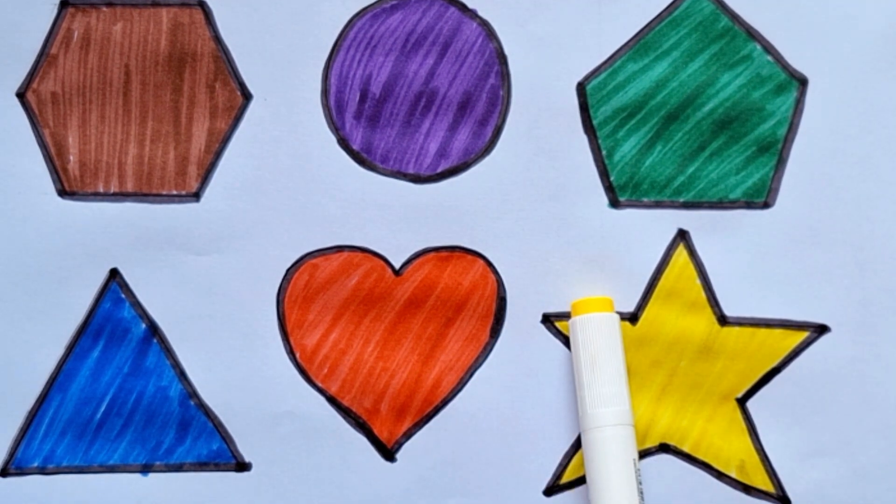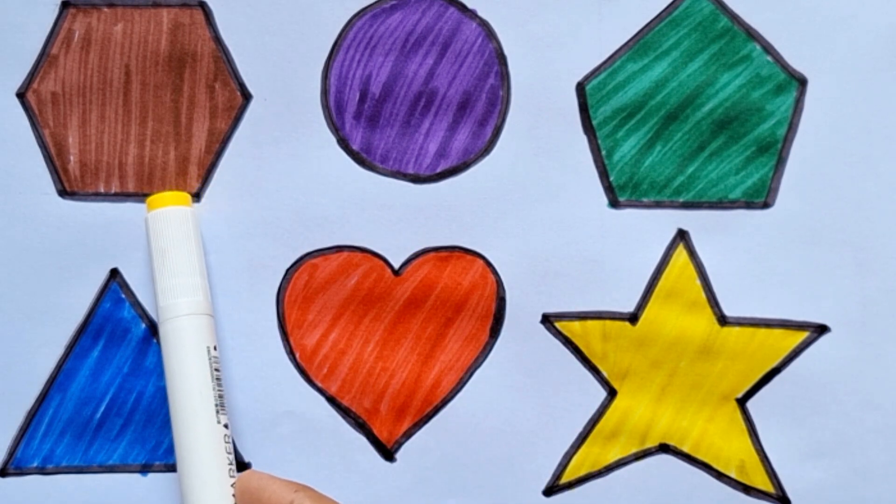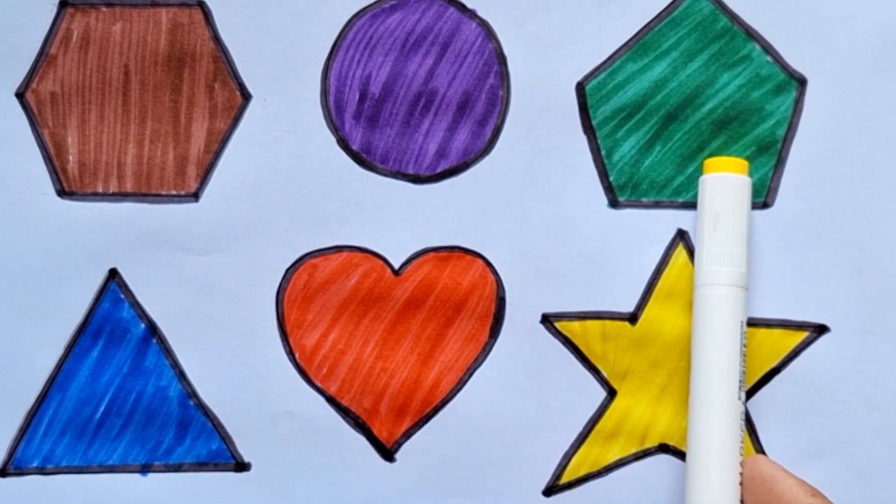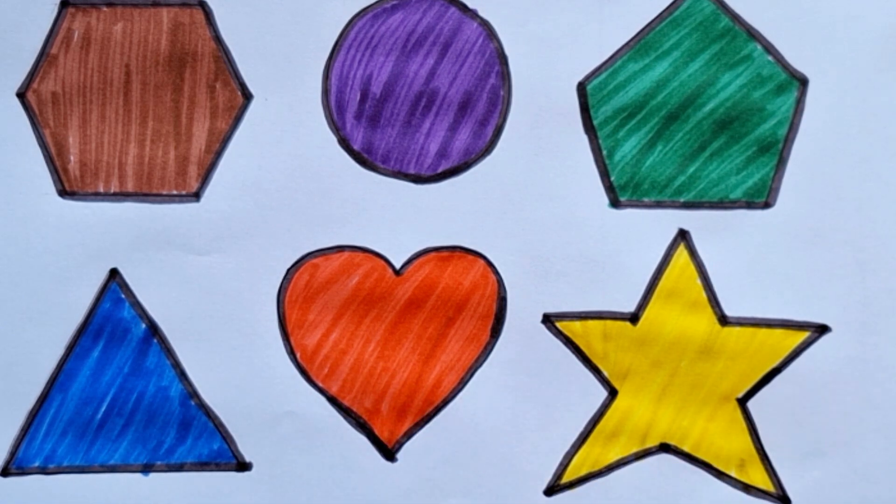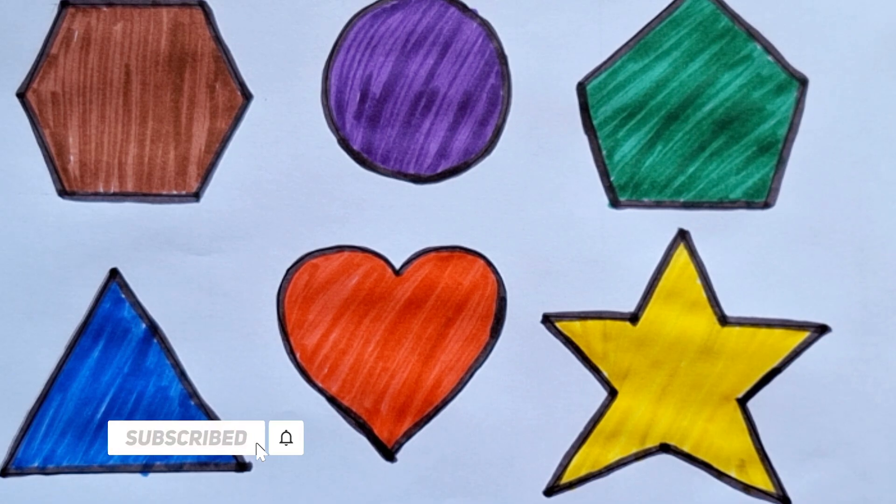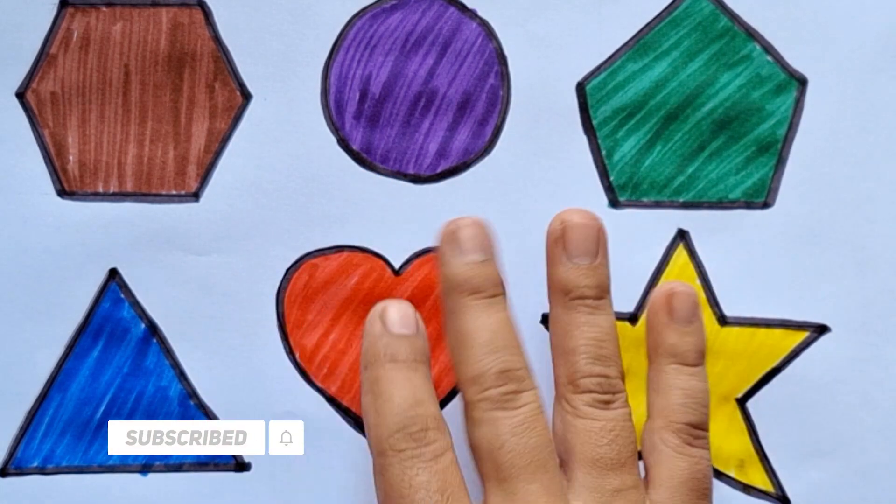Let's again learn 2D shapes names. This is hexagon, this is circle, this is pentagon, this is triangle, this is a heart, this is a star. If you like this video, make sure to subscribe my channel and give this video a big thumbs up. Bye-bye.